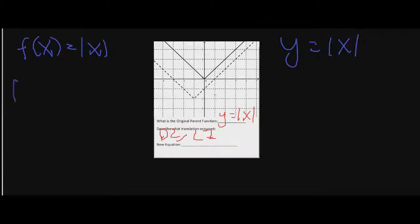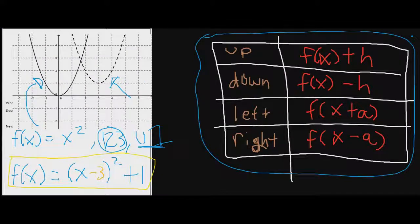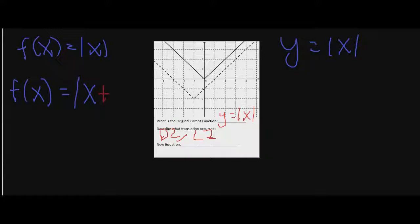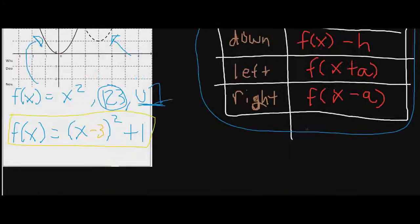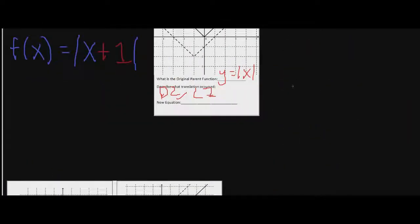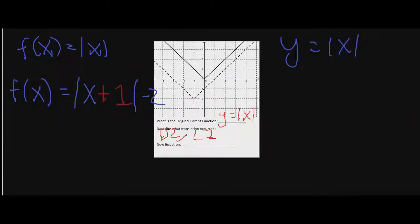This is my parent function. So we're going to have f(x) equals the absolute value of x. If we move to the left, what are we going to do inside? Looking back at our chart, if we move to the left we're going to add that number inside the input. So it's going to be x plus 1 — we went to the left by 1, so x plus 1. Now we close the absolute value. And if we went down by 2, moving down means it's minus on the outside, so minus 2. My final equation is y = |x + 1| − 2.